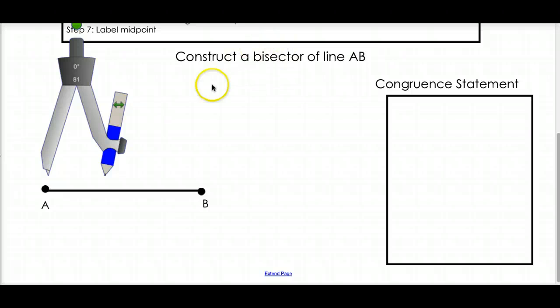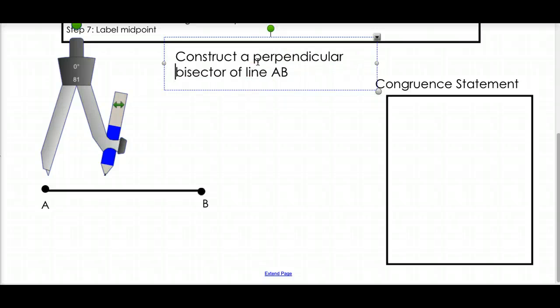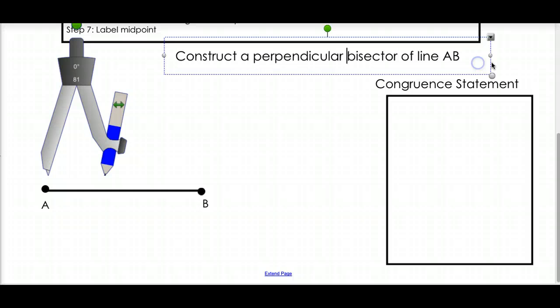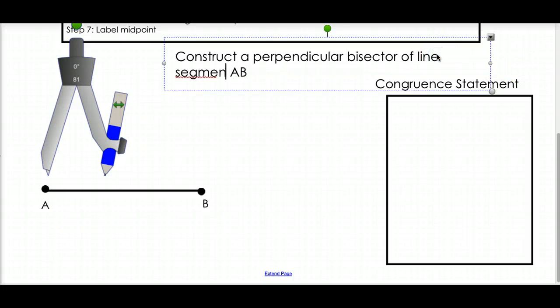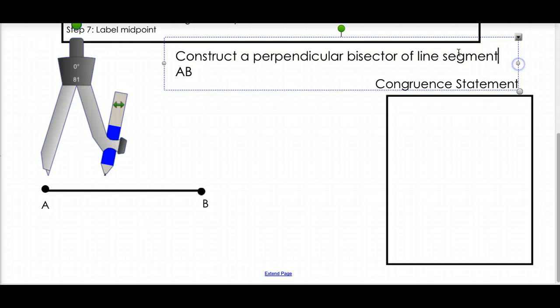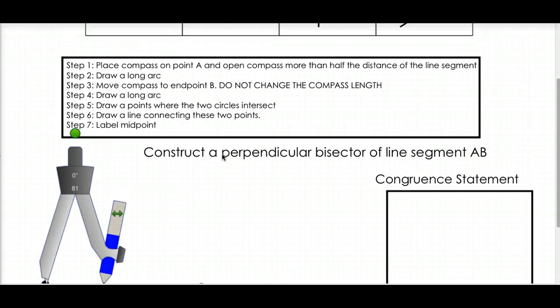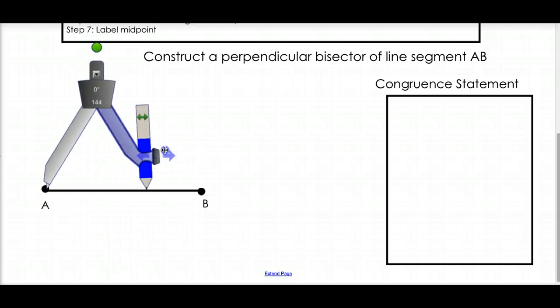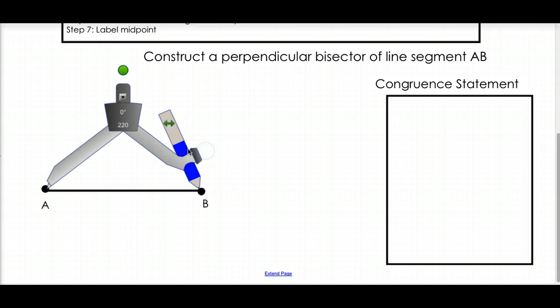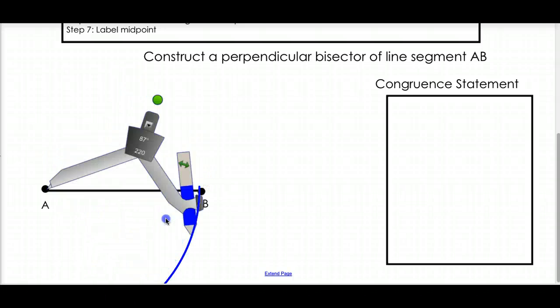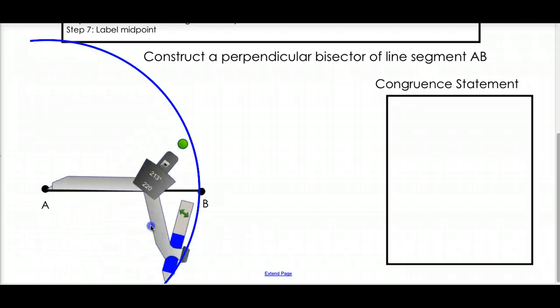So, what we're going to do is construct a perpendicular bisector of line AB. To create this perpendicular bisector, just follow along with the steps. First, what we're going to do is take this compass, and we're going to open it to the full length. And what we're going to draw is a big old arc. So, once you open it to the full length, you draw an arc around like this. Got it?